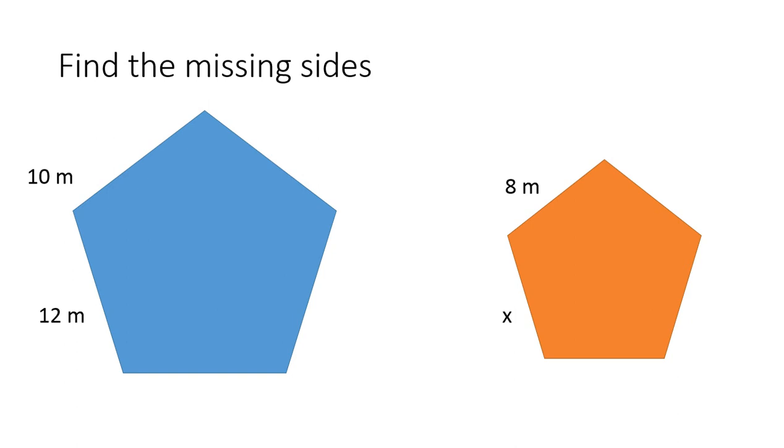So let's say we want to find our missing side of this one, and we have these two pentagons, these two five-sided figures. They're not regular pentagons, as you can tell. They don't have the same length on either one. And so now what we want to do is we want to find the missing side. So we want to find that X.